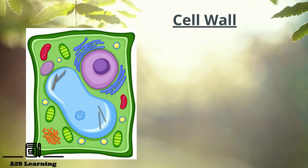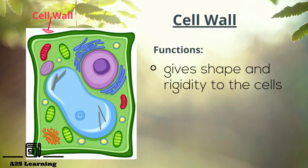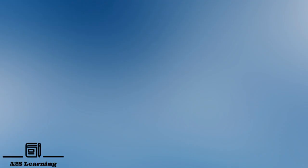The cell wall: In addition to cell membrane, plant cells have a non-living deposition outside their plasma membrane called cell wall. It is usually composed of cellulose. Cell wall gives shape and rigidity to the cells.